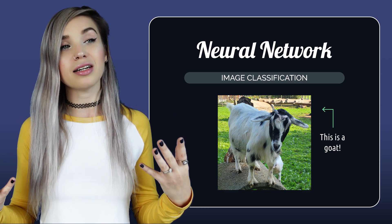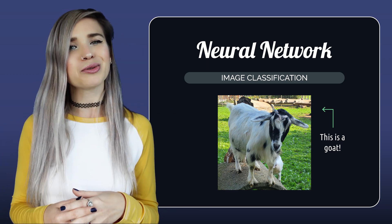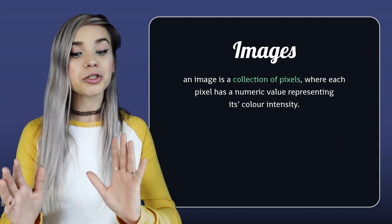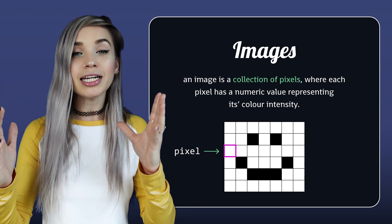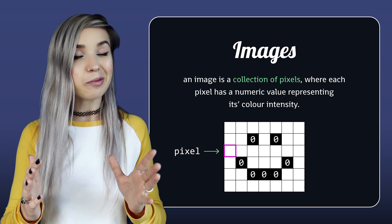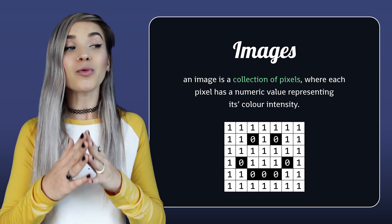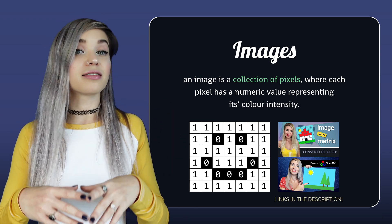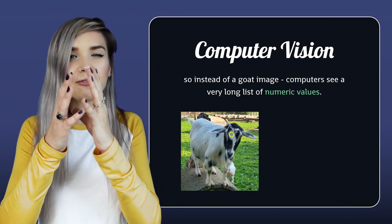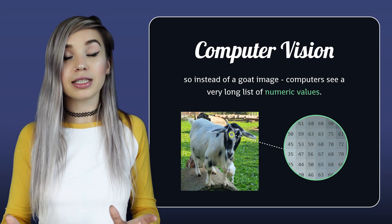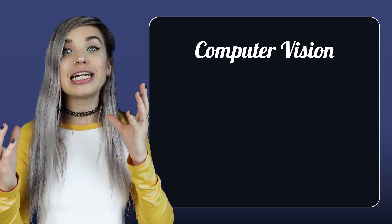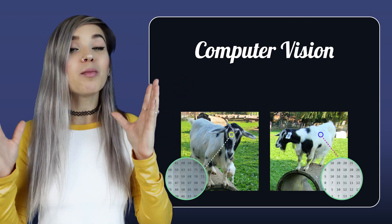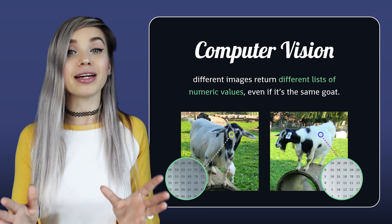But if we are so good at it, how come computers are not? Aren't they supposed to be smart or something? When a computer sees an image, it actually sees a collection of pixels, where each pixel stores a numeric value representing the color intensity. We already talked about it in previous lessons. So instead of a goat photo, our computer sees a very long array of numeric values. And the tricky part is, even if we take another photo of the exact same goat on the exact same background, we will most likely get a brand new array of numeric values.